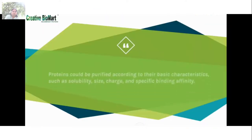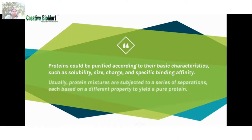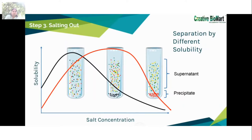Proteins can be purified according to their basic characteristics such as solubility, size, charge, and specific binding affinity. Usually, protein mixtures are subjected to a series of separations, each based on a different property, to yield a pure protein. Most proteins are less soluble at high salt concentrations — an effect called salting out. The salt concentration at which a protein precipitates differs from one protein to another; hence, salting out can be used to fractionate proteins and also to concentrate dilute solutions of proteins, including active fractions from other purification steps.